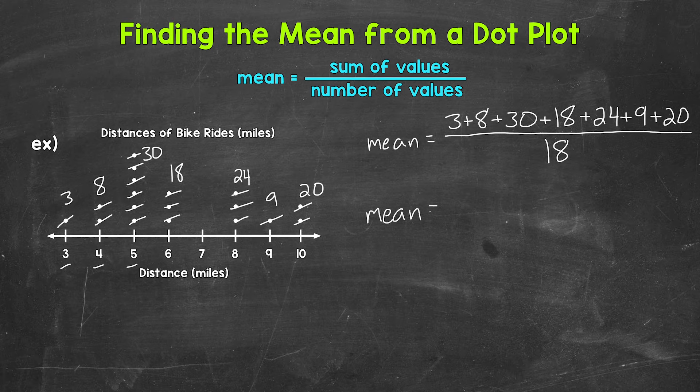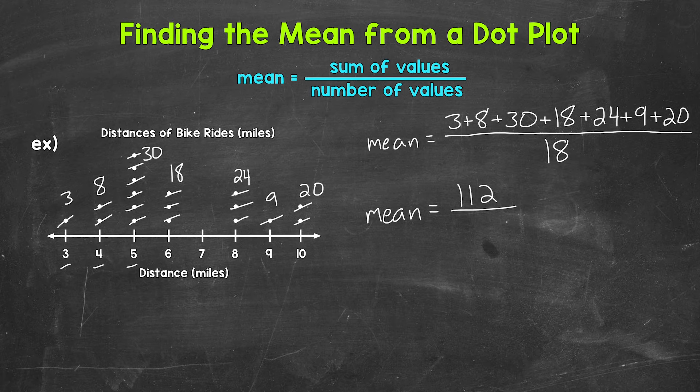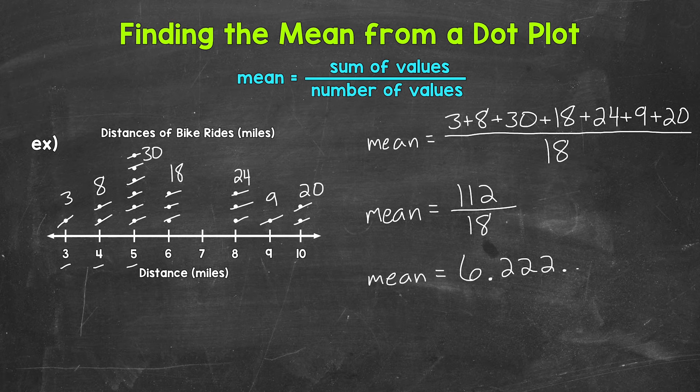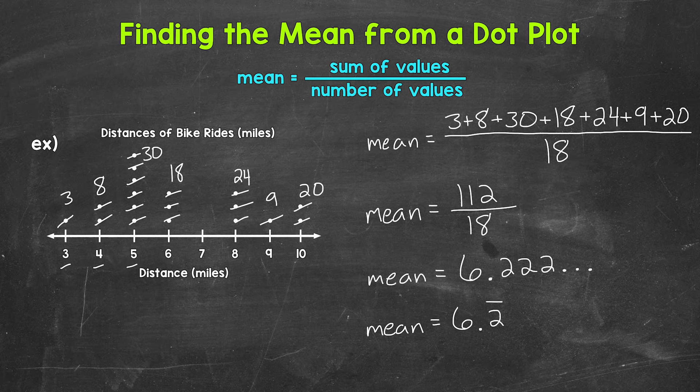So the mean is going to equal 112, the sum of the values, divided by 18. 112 divided by 18 gives us a mean of 6.222, and that 2 repeats. So we get 6 and 2 repeating. So we can write that as the mean equals 6.2 with a bar above the 2 to show that that repeats, or we can round.